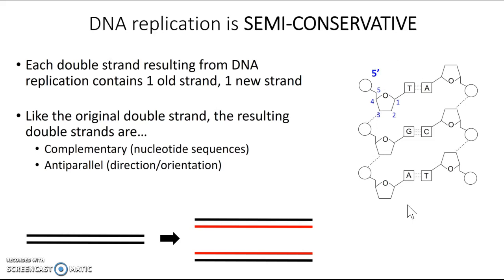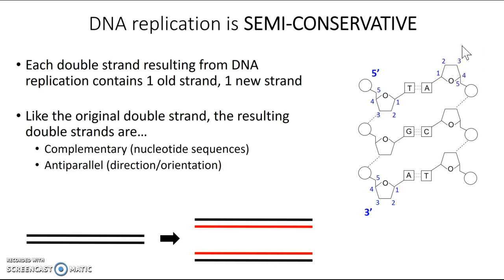Going down to the other end of the strand, it's carbon number three that's sticking out, so this would be the three prime end. Looking at the strand paired up with it, we start and number those carbons always starting near the nitrogenous base: one, two, three, four, five. Carbon number three is sticking out here, so this would be the three prime end. And down here, carbon number five is sticking out, so this would be the five prime end. You can see these two strands are going in opposite directions.